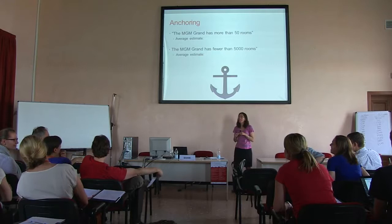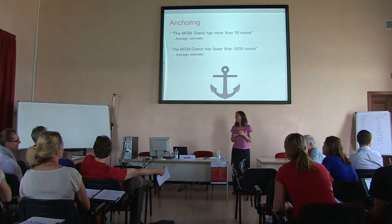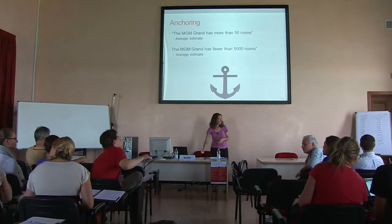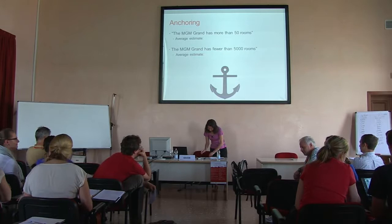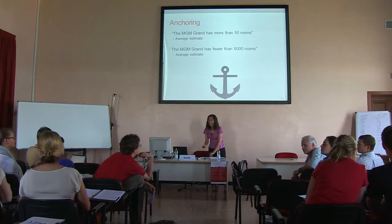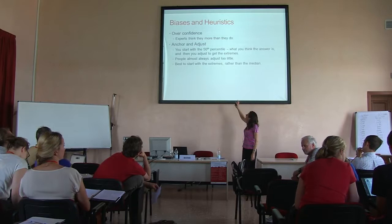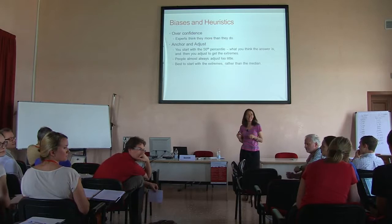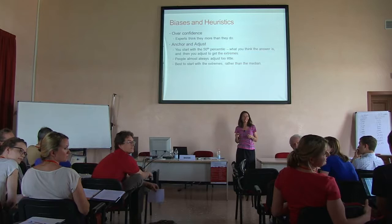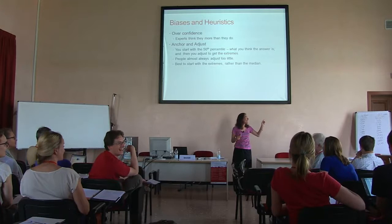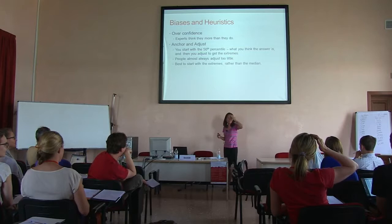So we have a number of biases: overconfidence and anchor-and-adjust. You'd ultimately like your expert to be an expert — it doesn't make much sense to ask some random person about the size of an MGM hotel. There are things you can do for both overconfidence and anchoring. A simple thing is to start with the extremes rather than starting with the middle. You can also explain overconfidence — that helps a little bit.